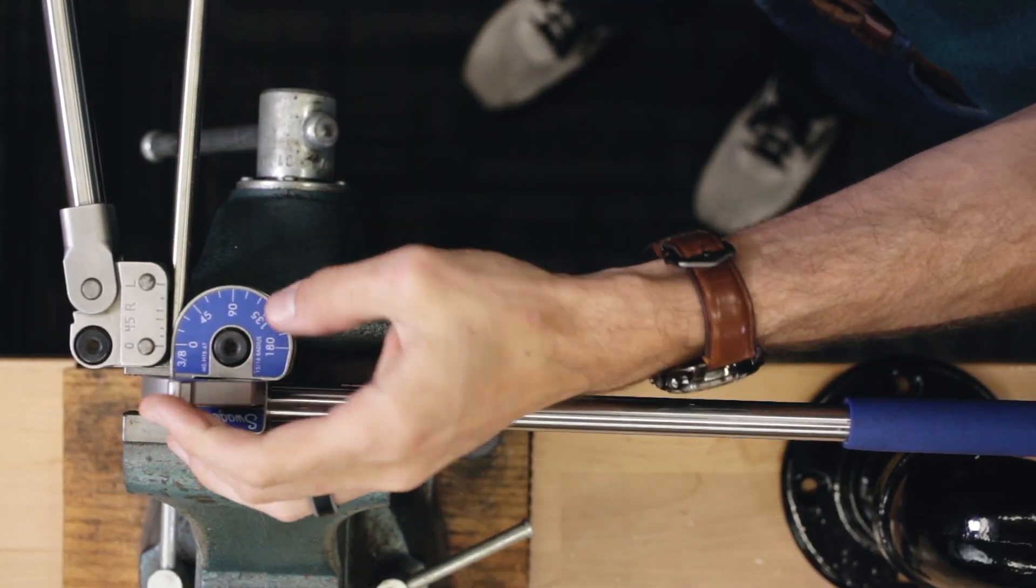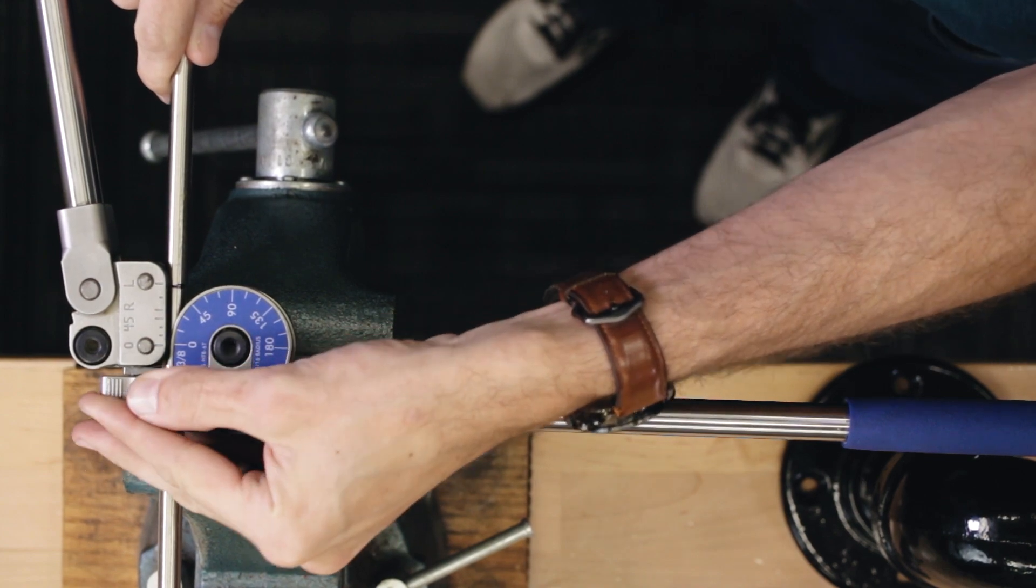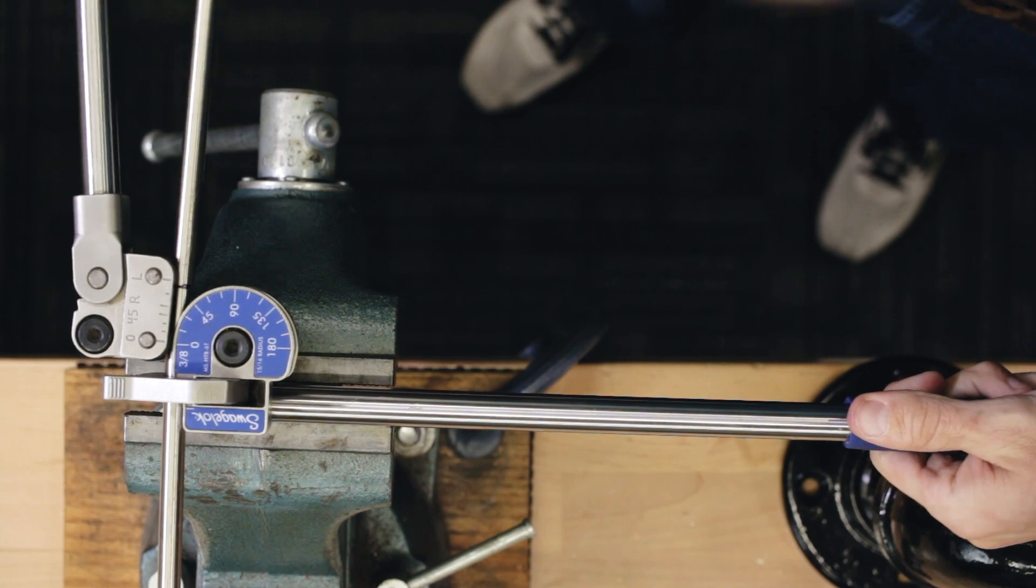Using the same techniques as the other bend, insert the tubing, align the zeros, and put the mark at the L. Clamp down with the latch and bend to the 90 degree mark.